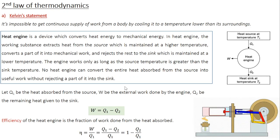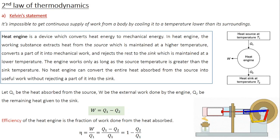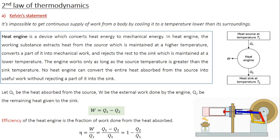The first law of thermodynamics talked about the equivalence of heat and work done — whenever work is done either by the system or on the system, an equivalent amount of heat energy is involved. But the first law has a limitation: it does not talk about the direction of heat flow, and this is answered by the second law of thermodynamics.